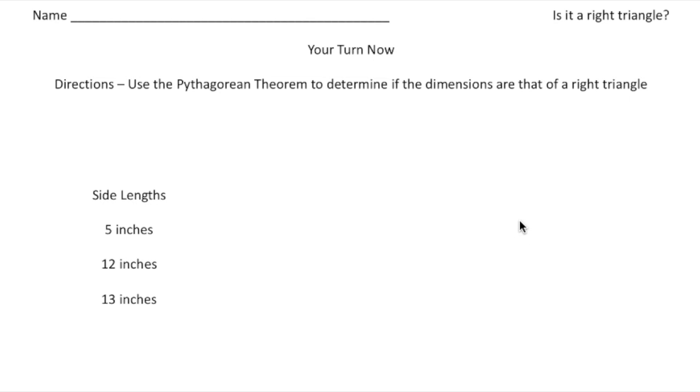All right. Welcome back. Let's see you do this practice problem. So the objective is to determine if this indeed are the dimensions of a right triangle. So let's first write down the theorem. So a squared plus b squared equals c squared. Now let's identify the sides.